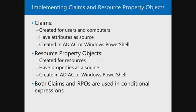Claims are created for users and computers using Active Directory attributes, configured in Active Directory Administrative Center or PowerShell. Resource Property Objects are created for resources — like file classification — and are applied down to the local file system level. Both claims and Resource Property Objects are used in the conditional expression: claims are for users (department, employee type, country), while resource property objects are for files and folders (classified as sensitive, secret, etc.).